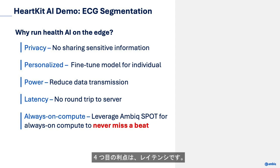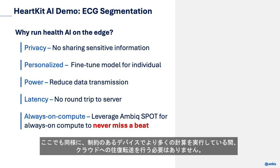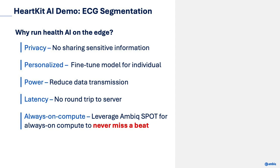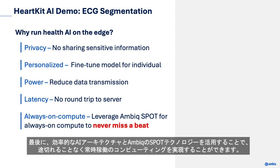The fourth advantage is latency. While we are performing more computation on a constrained device, we don't need to make round-trip transmissions to the cloud. And finally, by leveraging an efficient AI architecture coupled with AMBIC Spot technology, we can enable always-on compute, ensuring we never miss a beat.